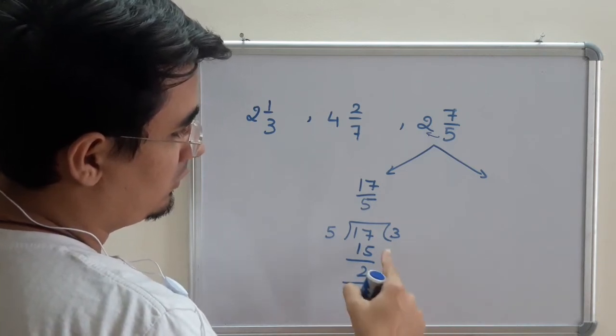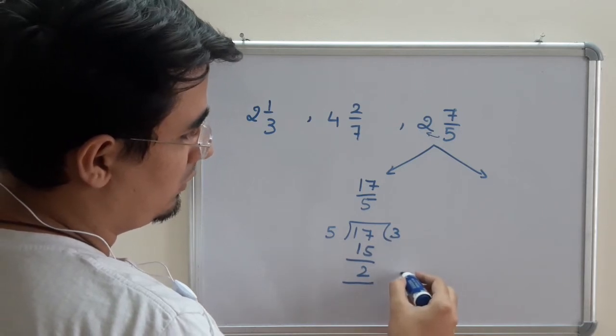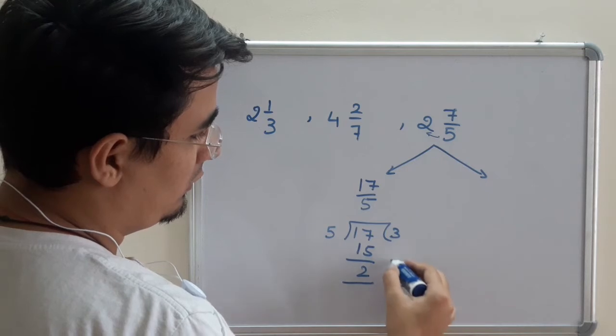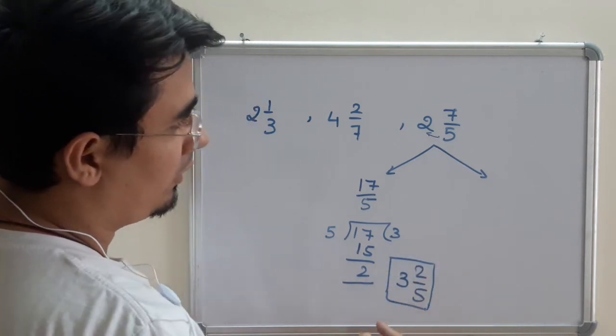So the answer is q r d. Quotient is 3, remainder is 2 upon 5. So we get the rewritten form as 3 2/5. That's the answer.